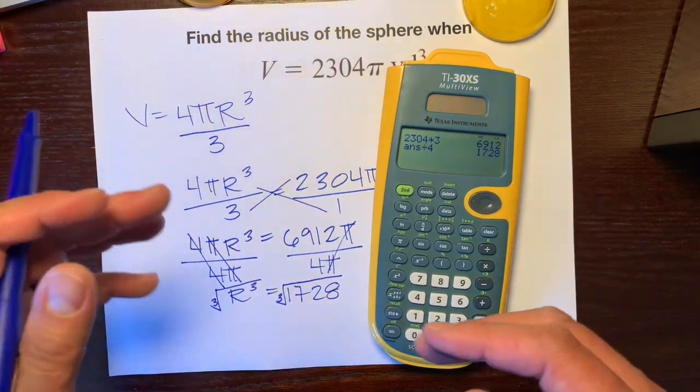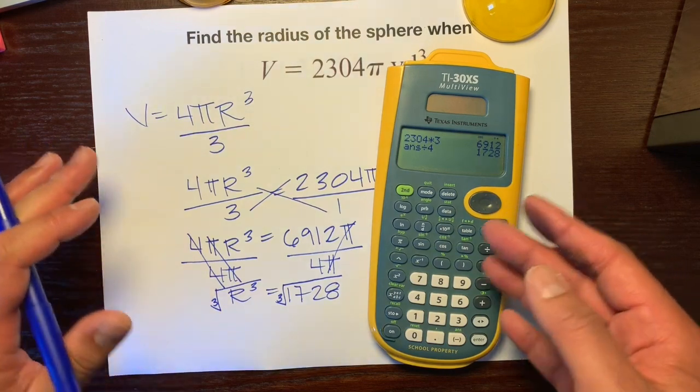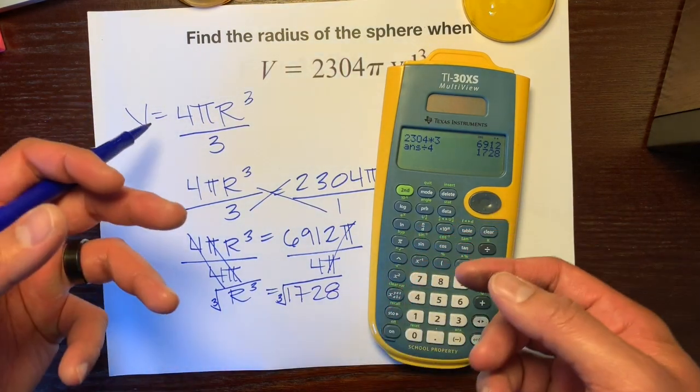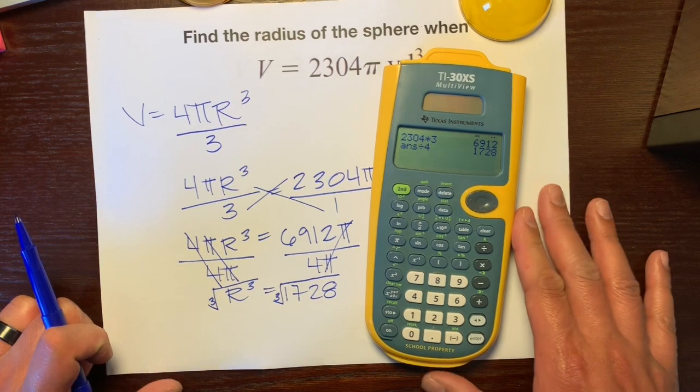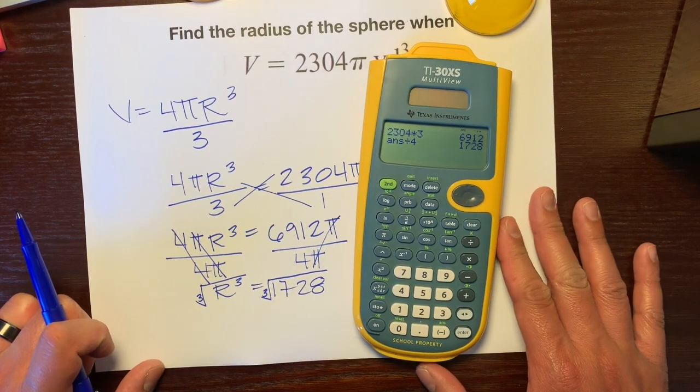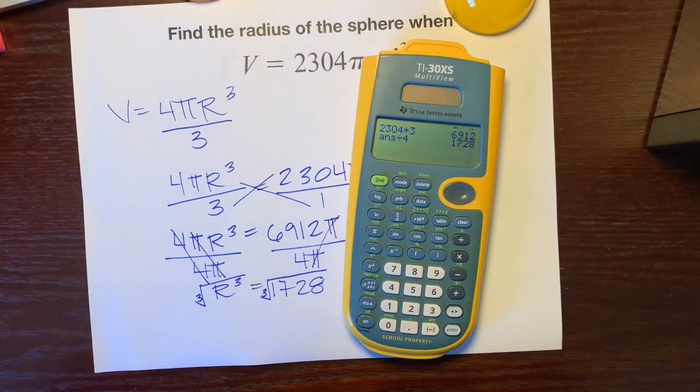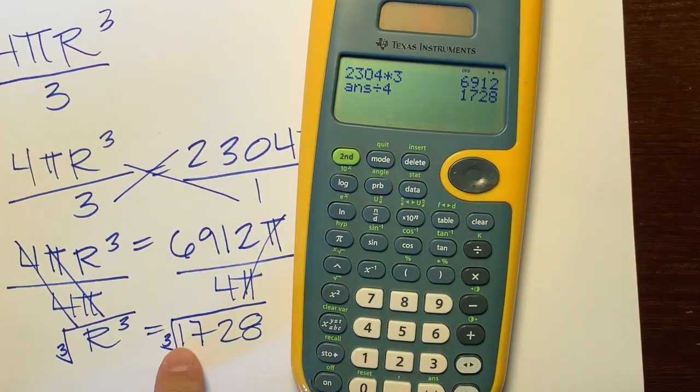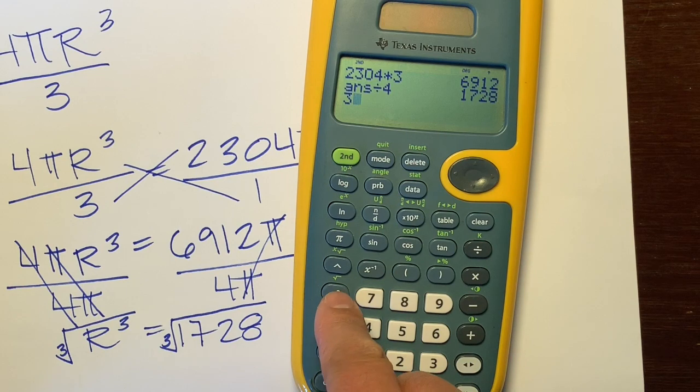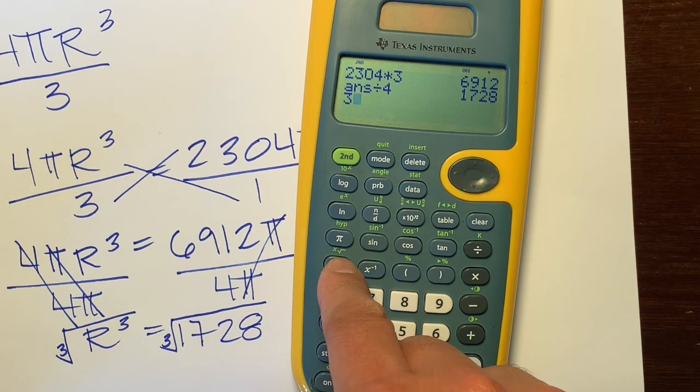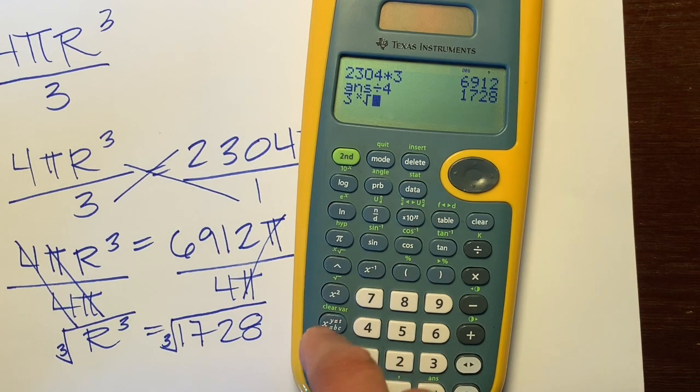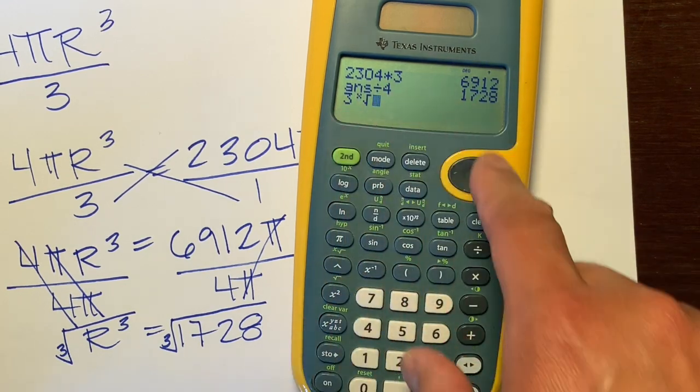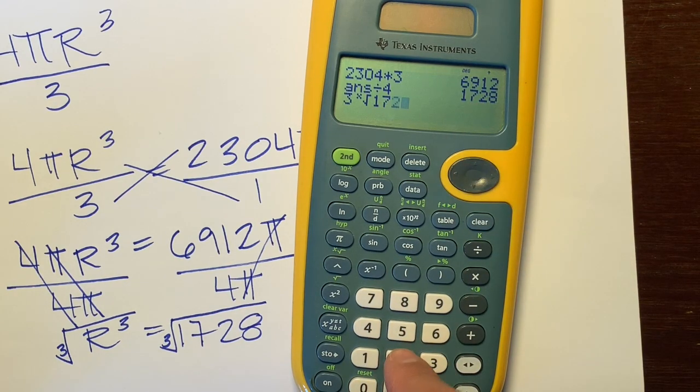Unlike square rooting, instead of finding pairs we have to find triplets. What times what times what gives us 1,728? One shortcut with our calculators is to type in the 3, press 2nd, and use this root symbol with an x, not the square root. This means we're getting the cube root, and then we'll type in 1,728.